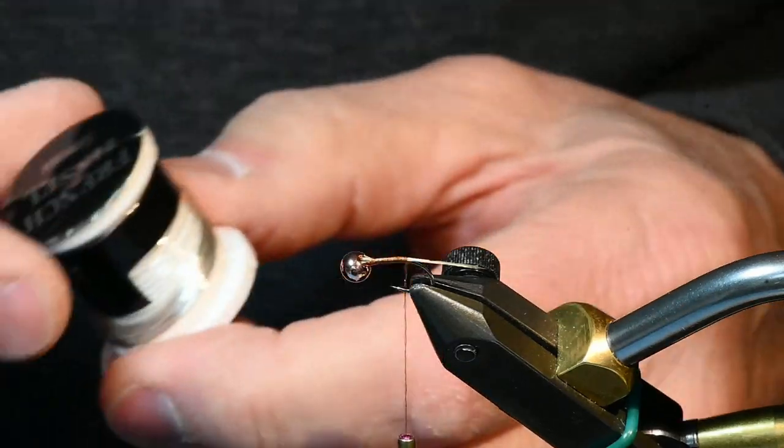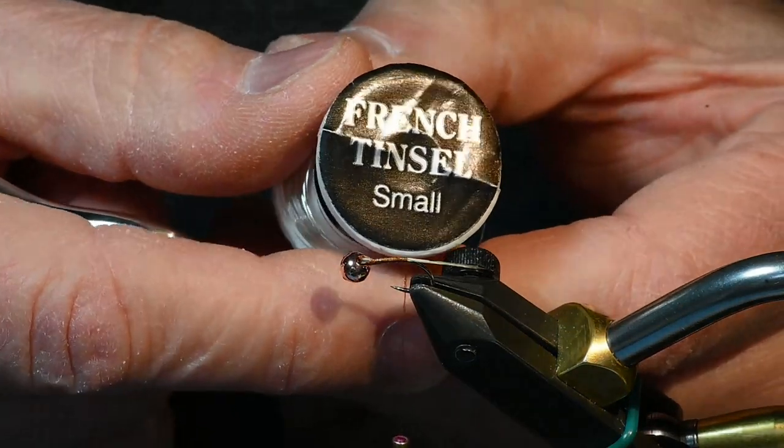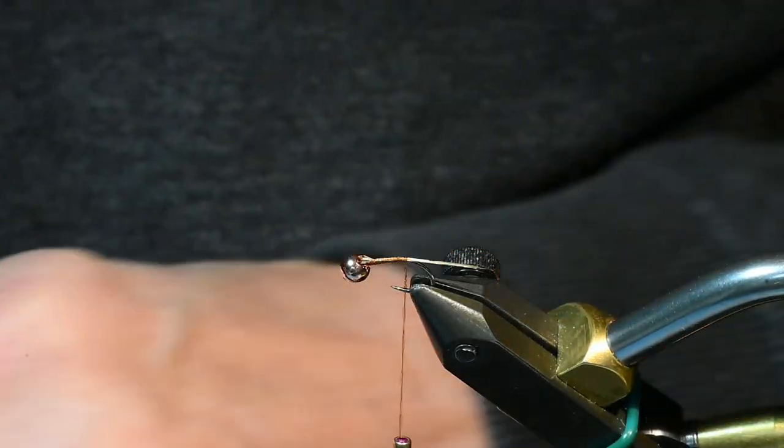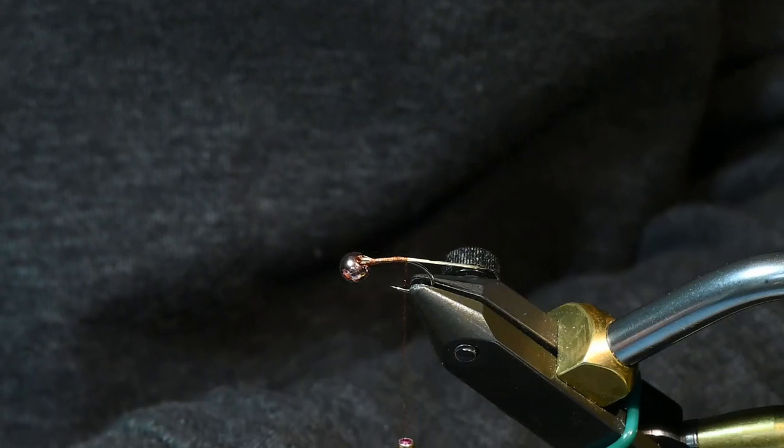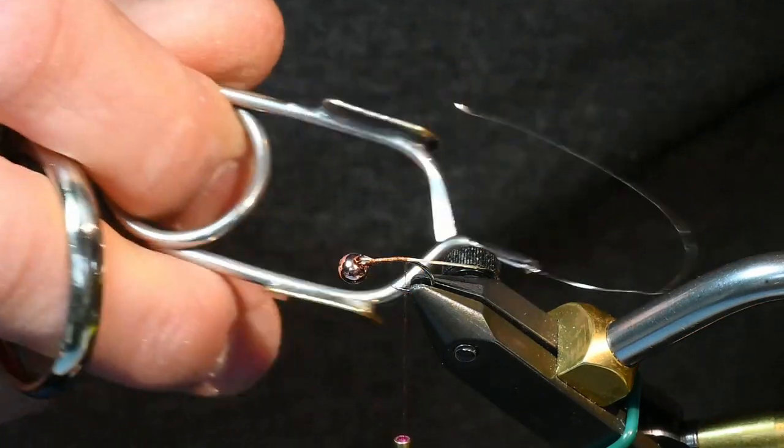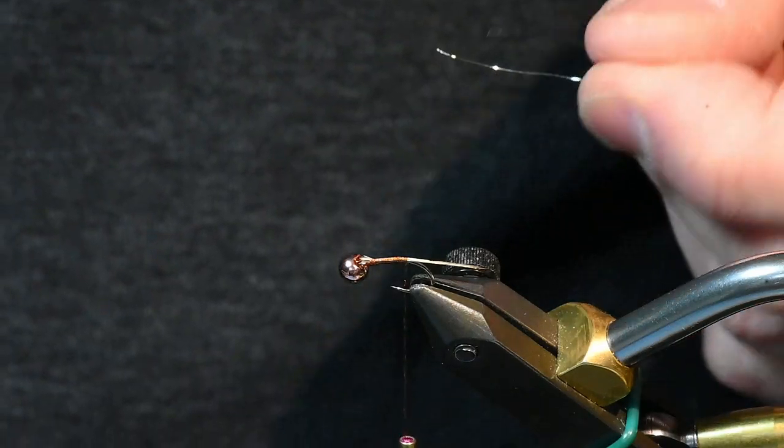For my rib I'm using some small silver wire. What I do to manage it is I put it into my hackle pliers so I can find it on my desk easily.